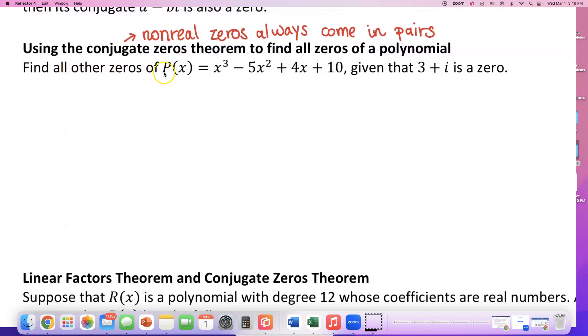It says find all zeros of P(x), that is x³ minus 5x² plus 4x plus 10. We look at the degree of the polynomial to determine how many zeros we're going to have. What's the biggest exponent in this polynomial? 3. So since degree equals 3, that tells us that P(x) has three zeros.